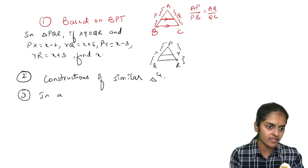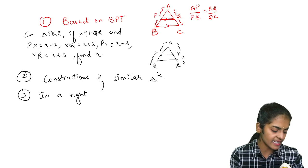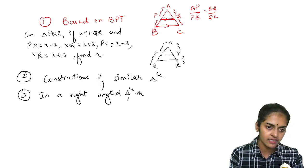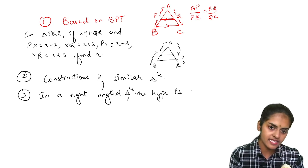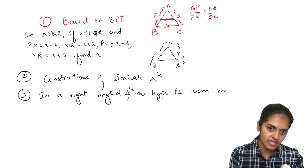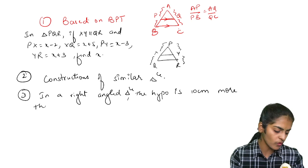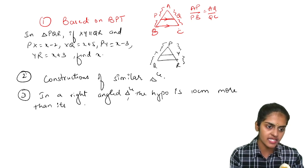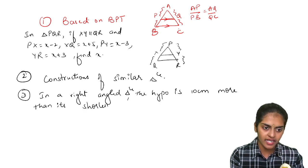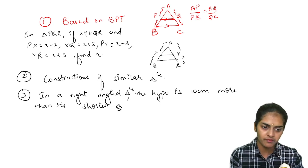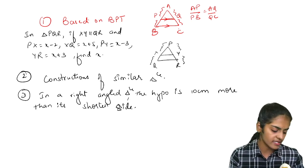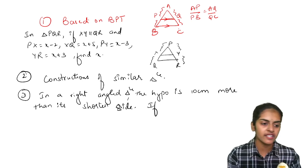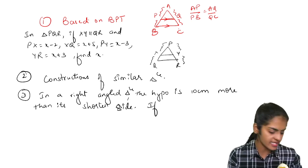And you will get another question of this type. In a right angled triangle, the hypotenuse is 10 centimeter more than its shortest side. So right angled triangle means definitely you will use Pythagoras theorem. So here they are saying the hypotenuse is 10 centimeter more than shortest side.